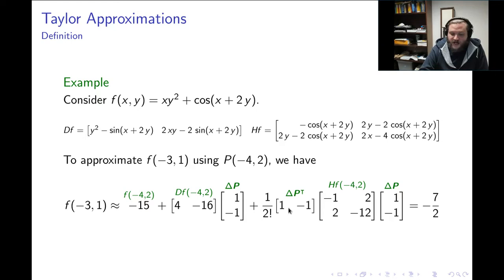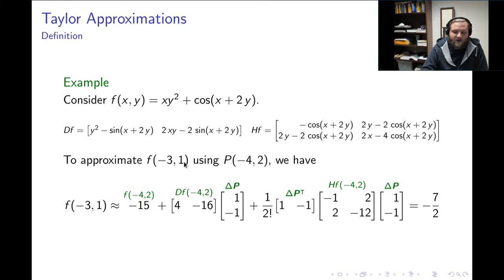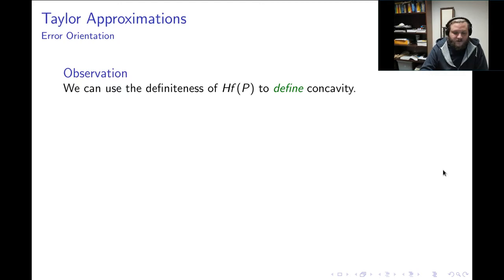My next term is 1 over 2 factorial times the quadratic form evaluated at the change vector. So this is the change vector transpose — 1, negative 1 as a row — multiplied by the Hessian derivative evaluated at negative 4, 2, which gives me a specific 2-by-2 matrix, and then multiplied by the change vector as a column, 1, negative 1. When I do all the arithmetic, I end up with the output negative 7 halves. So this is my approximation of the output at negative 3, 1 using data at the original point negative 4, 2.